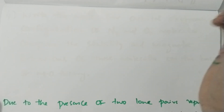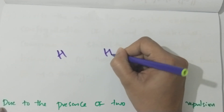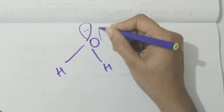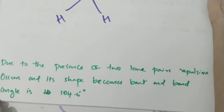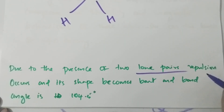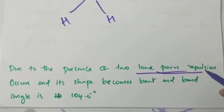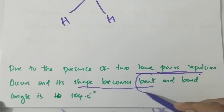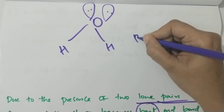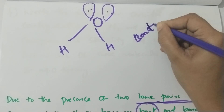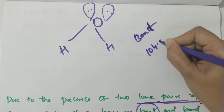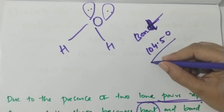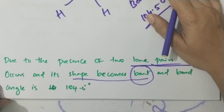For H2O, oxygen has sp3 hybridization. Due to the presence of two lone pairs, greater repulsion occurs between the lone pair electrons. As a result, the shape becomes bent, and the bond angle is 104.5 degrees.